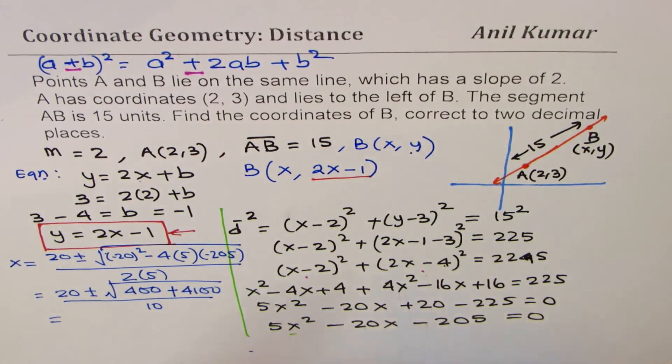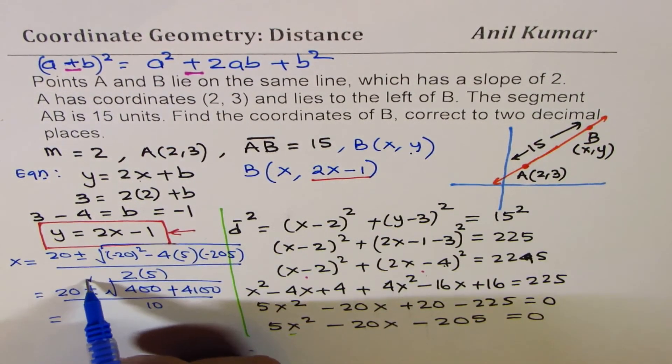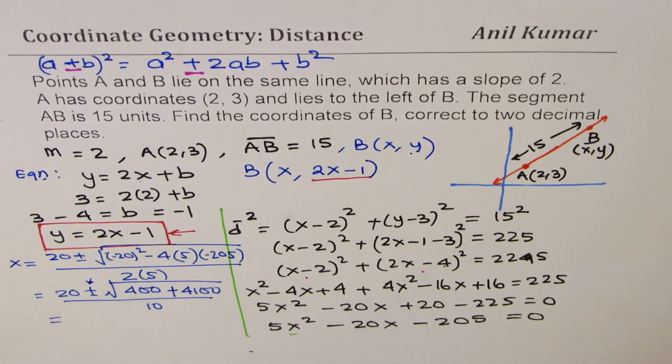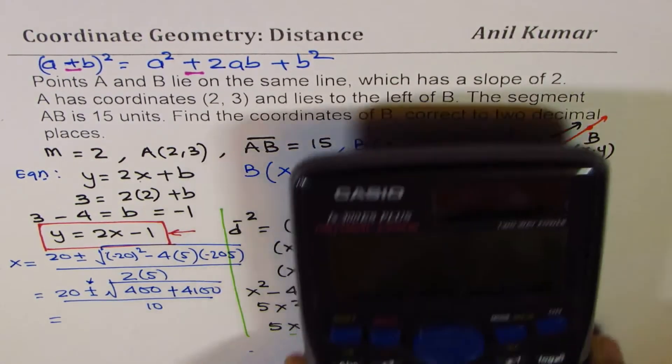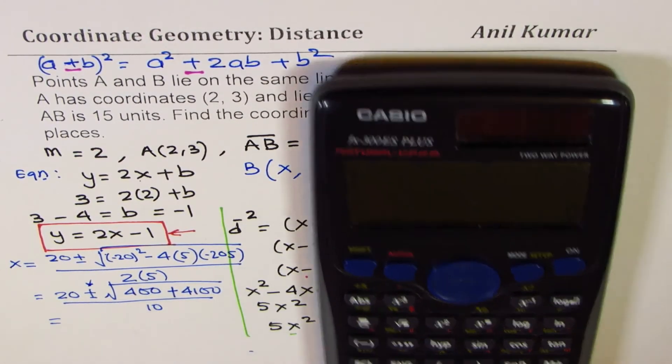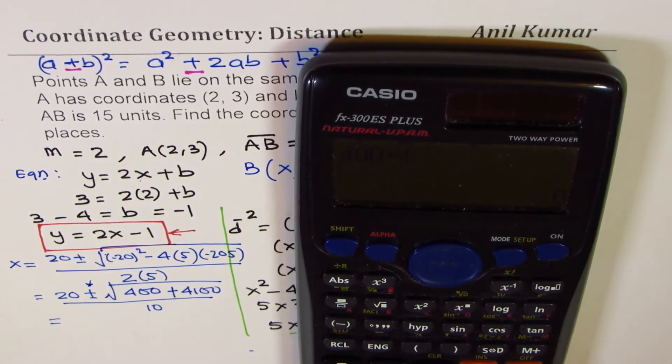Since we are looking for a point on the right side, we'll use positive, correct? So, let me calculate this out. So, within the square root, we have 400 plus 4100. And then we'll square root this, our answer.